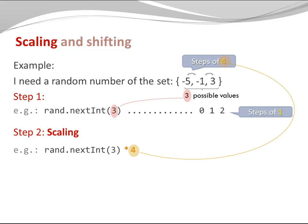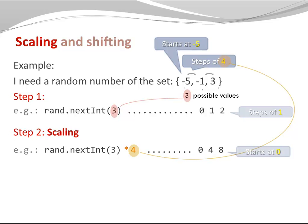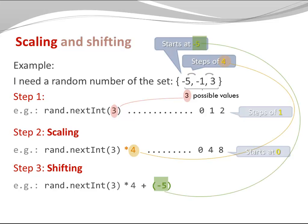So I'm going to do some scaling here — I'm going to multiply the number returned by nextInt by 4, because 4 is my step size. At this point I receive one of the values 0, 4, or 8. Now we get the right amount of possible values and the right step size between the values. However, the values returned start at 0, while the values we want start at minus 5. So we need yet another step in our algorithm: we need to do some shifting. The way I shift is by adding minus 5, because minus 5 is the start of my desired list of possible values.